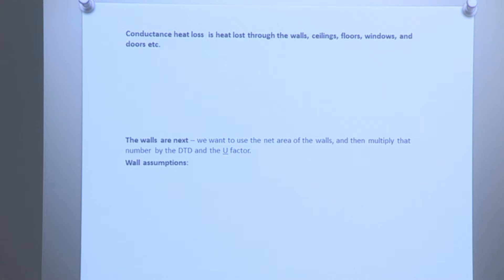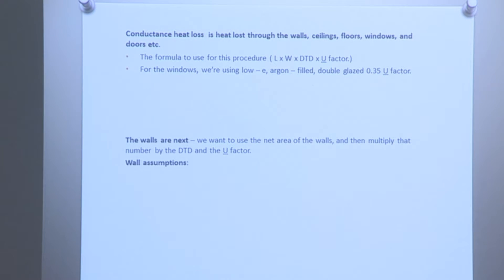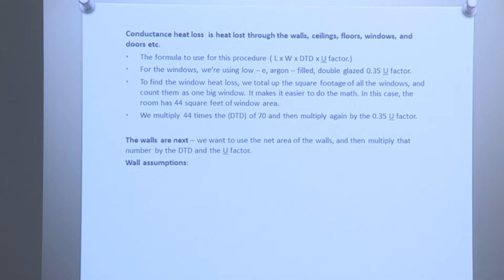Conductive heat loss is heat loss through walls, ceilings, floors, windows, doors, etc. The formula is: length times width times design temperature difference times the U-factor. For the windows, we're using low-E argon-filled double-pane glass with a U-factor of 0.35. To find the window heat loss, total up the square footage of all the windows and count them as one big window — in this case, the room has 44 square feet of window. We multiply 44 times the design temperature difference of 70 and then multiply by the U-factor 0.35: 44 times 70 times 0.35 equals 1,078 BTUs of heat loss for the windows.